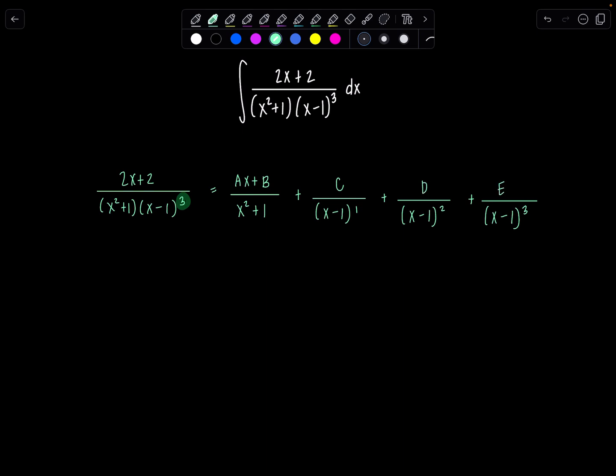We got to solve for a, b, c, d, and e. First thing we need to do is multiply through, get rid of all the denominators. So the LCD is x squared plus 1 and x minus 1 cubed. So then here we have 2x plus 2 equals ax plus b times x minus 1 cubed plus c times x squared plus 1 times x minus 1 squared, d times x squared plus 1, x minus 1, and then e times x squared plus 1.